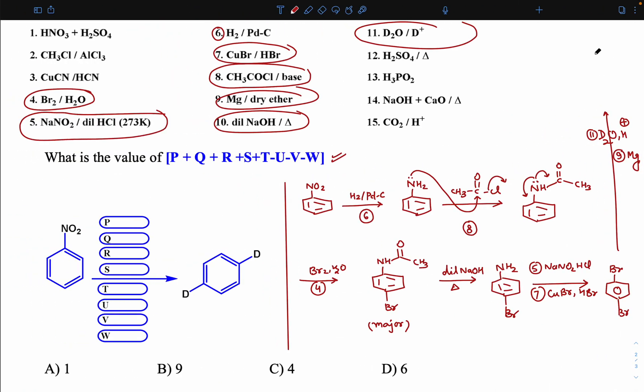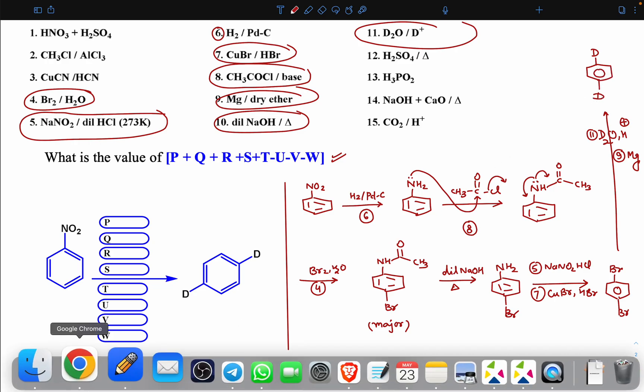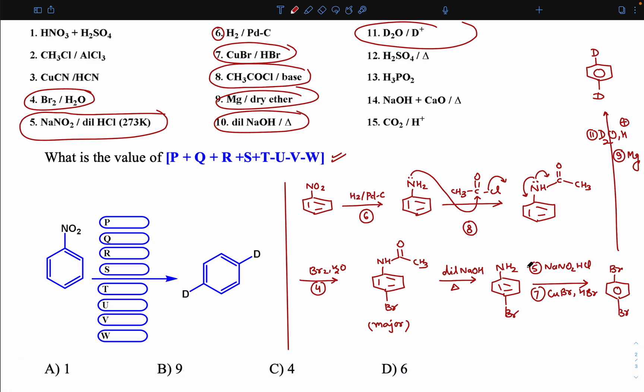This is the way how to convert this nitrobenzene into di-deuterobenzene. Now simply write the numbers: 6 here, 8, after 8, 4, after 4 dilute NaOH is 10 number, then T is 5 number, after then 7 number, after then 7 number, after 9, 11 number. These are the values just to convert this nitrobenzene into di-deuterobenzene.